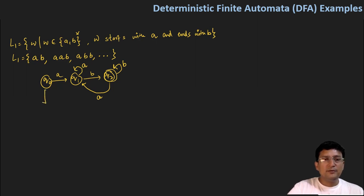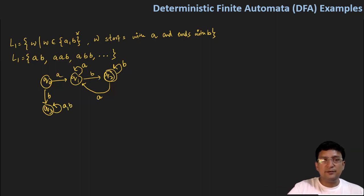But if my string starts with B, definitely my string will not be accepted. So I will move to the dead state. And at the dead state, if I get A or B, I should remain at the dead state itself.